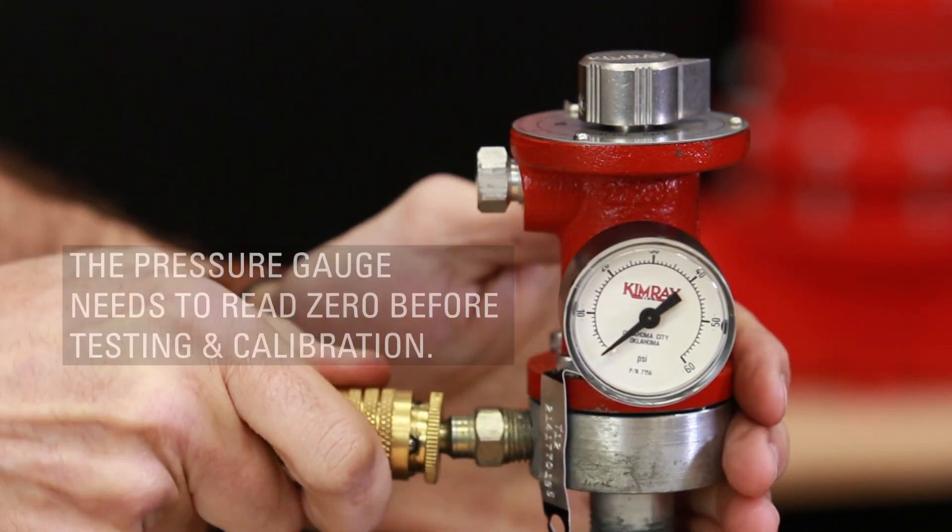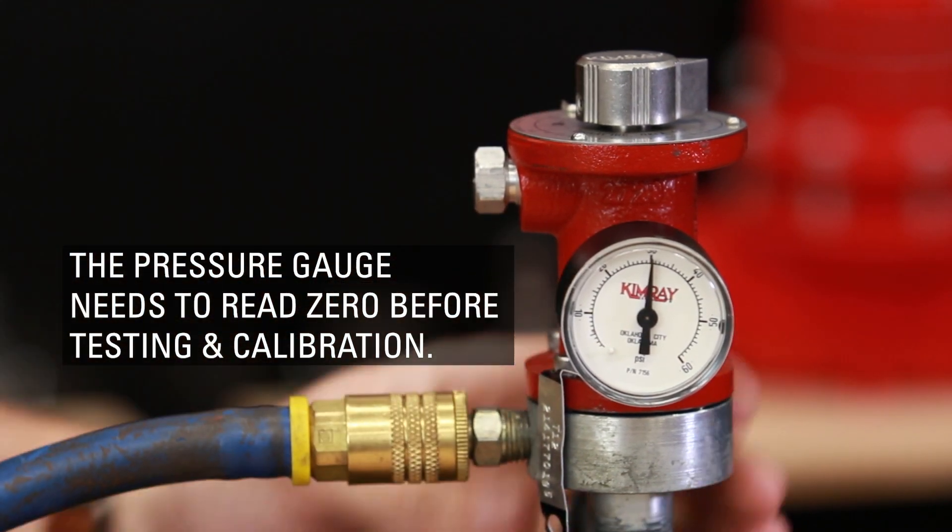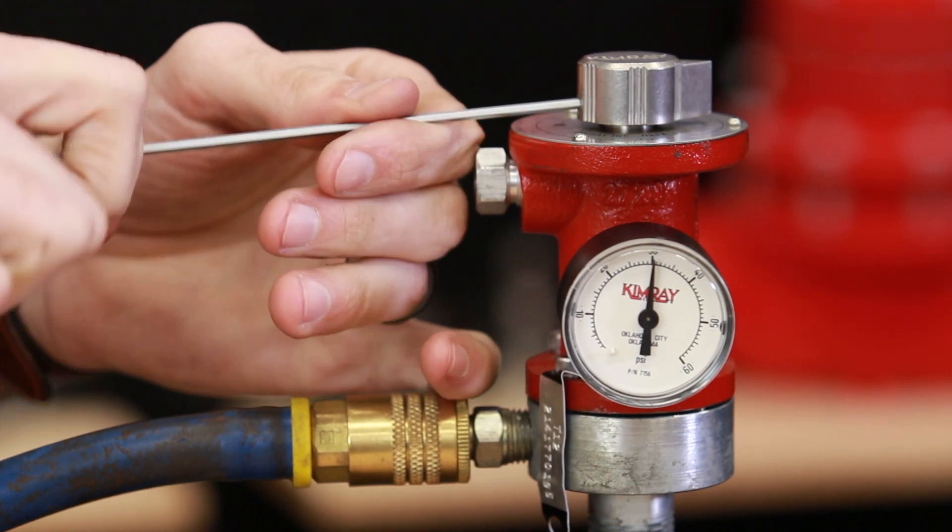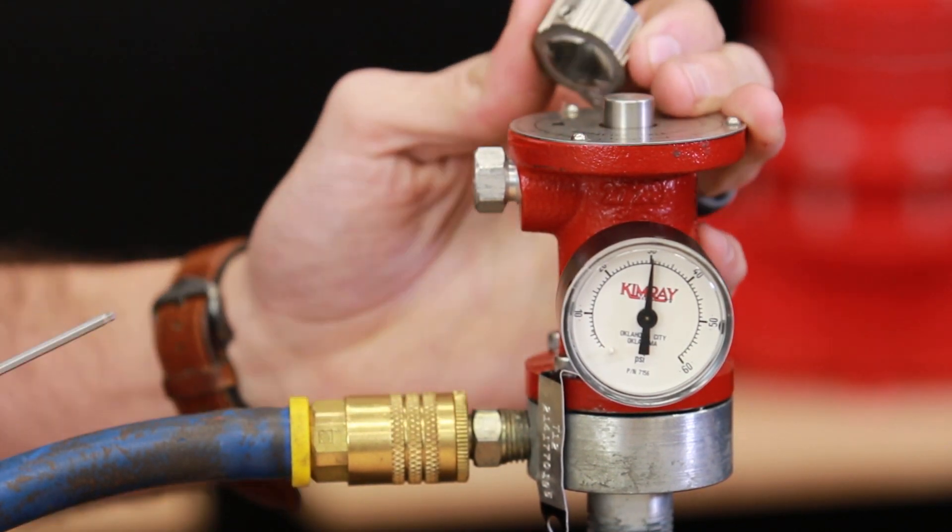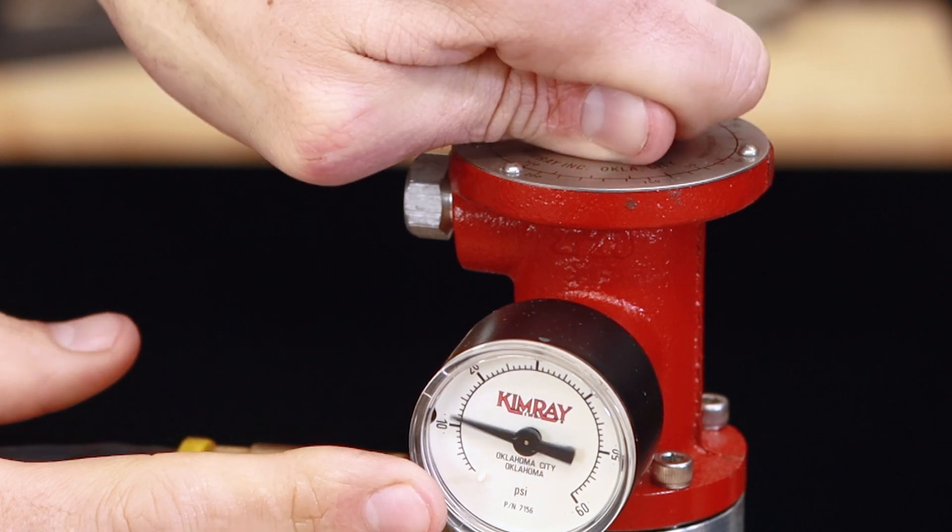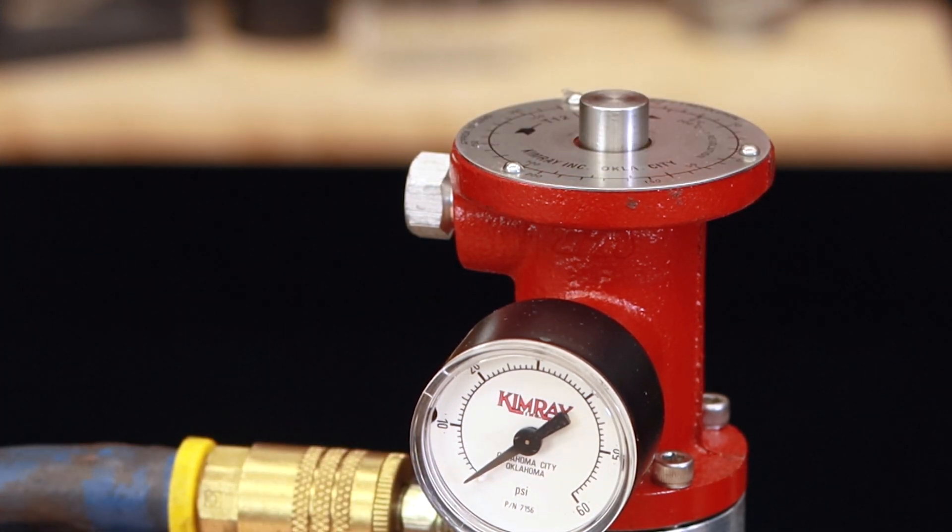The gauge may be showing pressure, but we'll need it at zero before we test and calibrate. Loosen the set screw from the adjustment knob and remove the knob. If pressure is indicated on the outlet gauge, turn the seat counterclockwise slowly until the pressure vents from the gauge. The gauge should read zero before you begin.